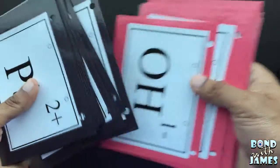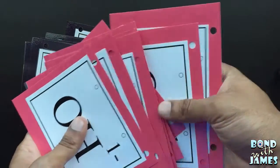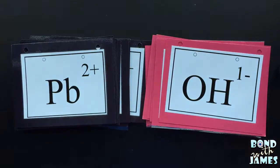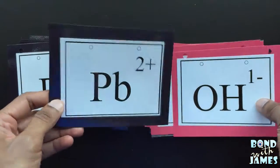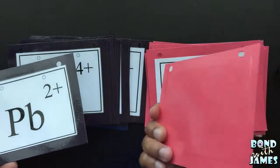I used black for the transition metals and red construction paper for the polyatomic ions, although in reality the color doesn't really matter.